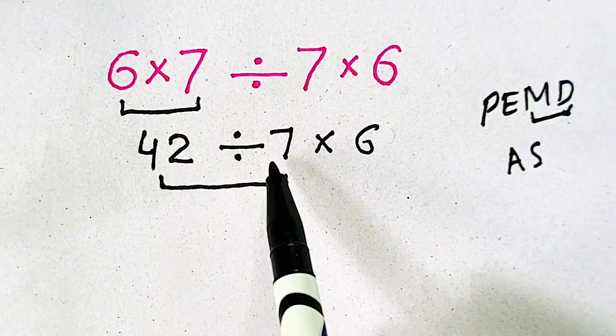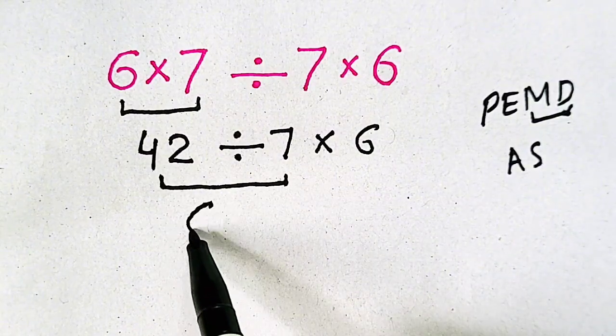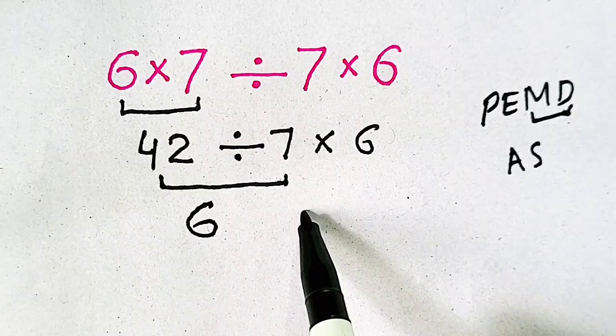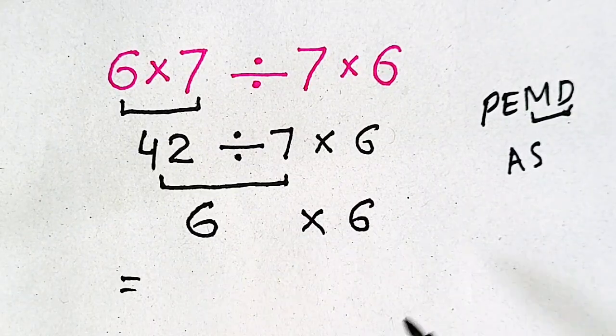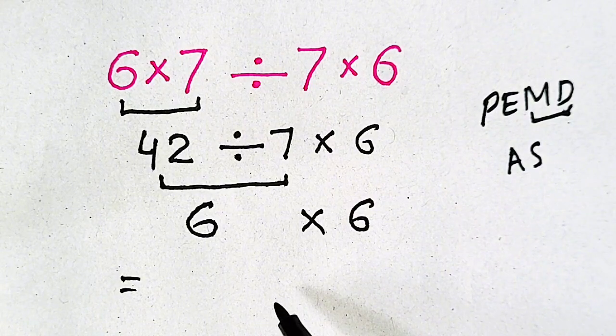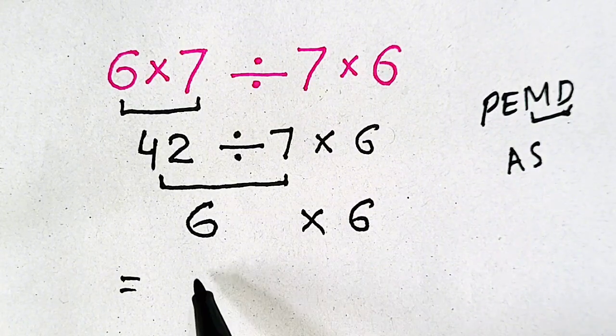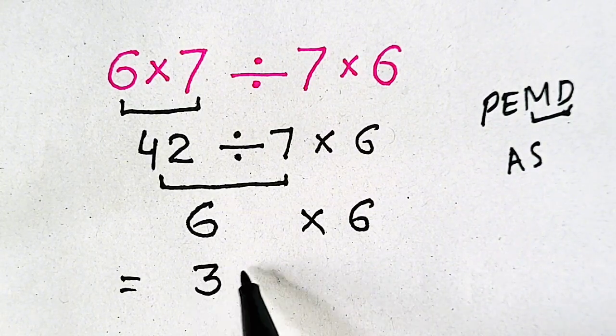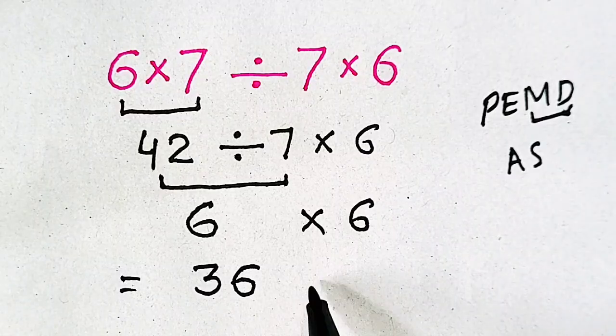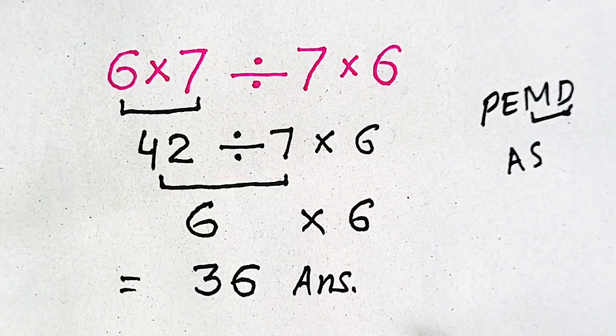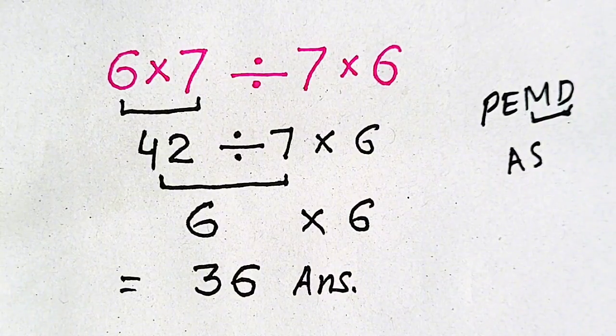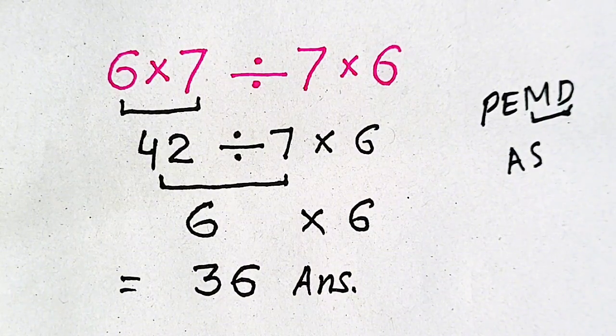So 42 divided by 7 will be equal to 6 times 6. Now it's very simple, 6 times 6 will be equal to 36, which will be our correct answer. Thank you for watching and subscribing to my channel.